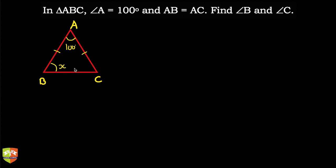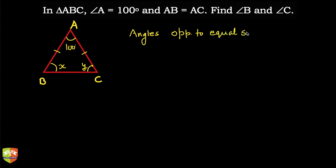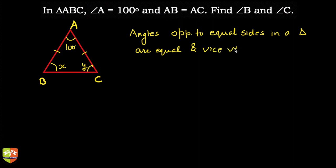So, we need to find X and Y — what are these? We just learned that angles opposite to equal sides in a triangle are equal, and vice versa. Vice versa means that if angles are equal, the sides will be equal. So, if the sides are equal, we know that X is equal to Y.